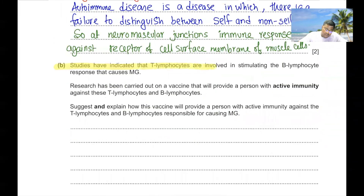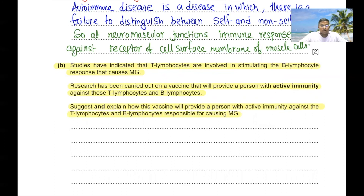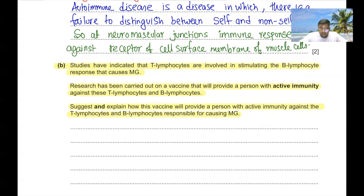Part B. Studies indicate T lymphocytes stimulate the B lymphocyte response causing myasthenia gravis. Research has been carried out on a vaccine to provide active immunity against these T and B lymphocytes. The vaccine contains antigens which stimulate an immune response; antibodies are produced against the defective lymphocytes. Memory cells remain in the body giving a long-lasting effect of eliminating those defective T and B cells.